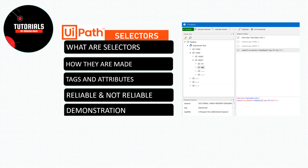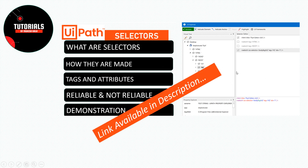Hi everyone, welcome back to the channel. This is the next video in the UiPath selector series. In the previous two videos we have seen what selectors are, how they are made, what tags and attributes are, how to differentiate between reliable and non-reliable selectors, and all the buttons available in UiPath Explorer such as validate, indicate element, and highlight. That video is available on the channel — I'll put the link in the description.